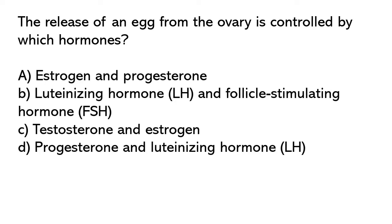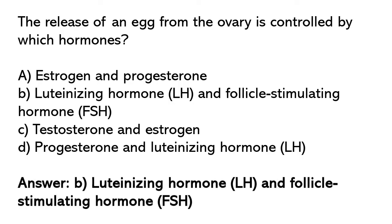The release of an egg from the ovary is controlled by which hormones? Options: A) Estrogen and progesterone, B) Luteinizing hormone and follicle stimulating hormone, C) Testosterone and estrogen, D) Progesterone and luteinizing hormone. So the correct answer is option B. Luteinizing hormone and follicle stimulating hormone.